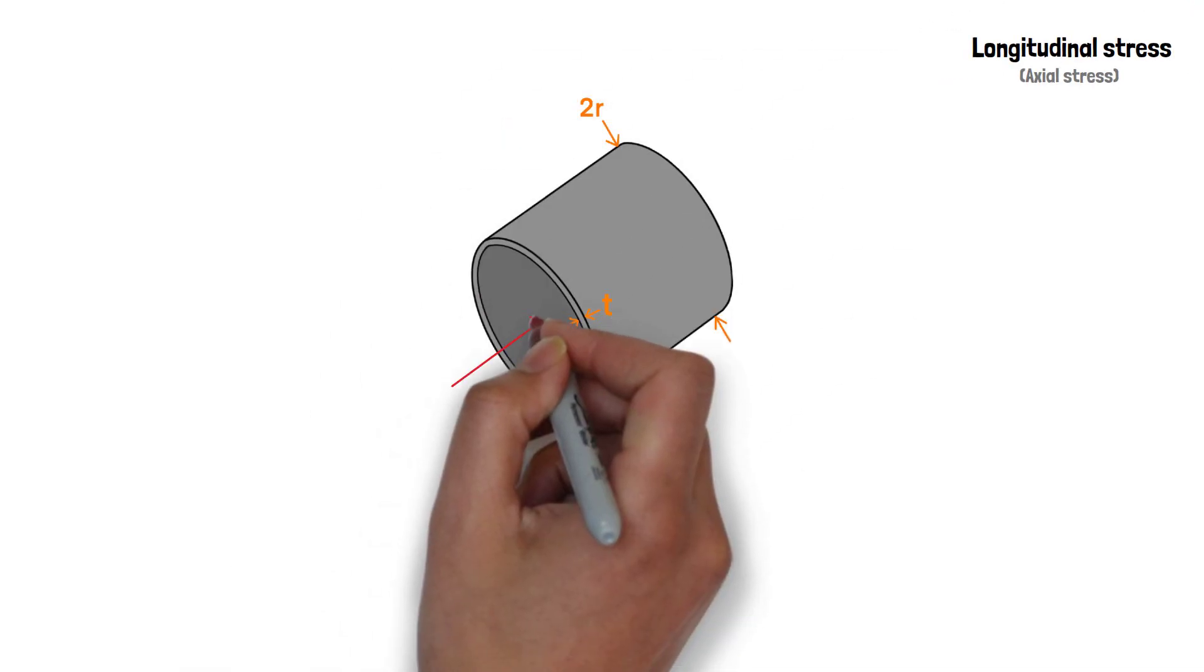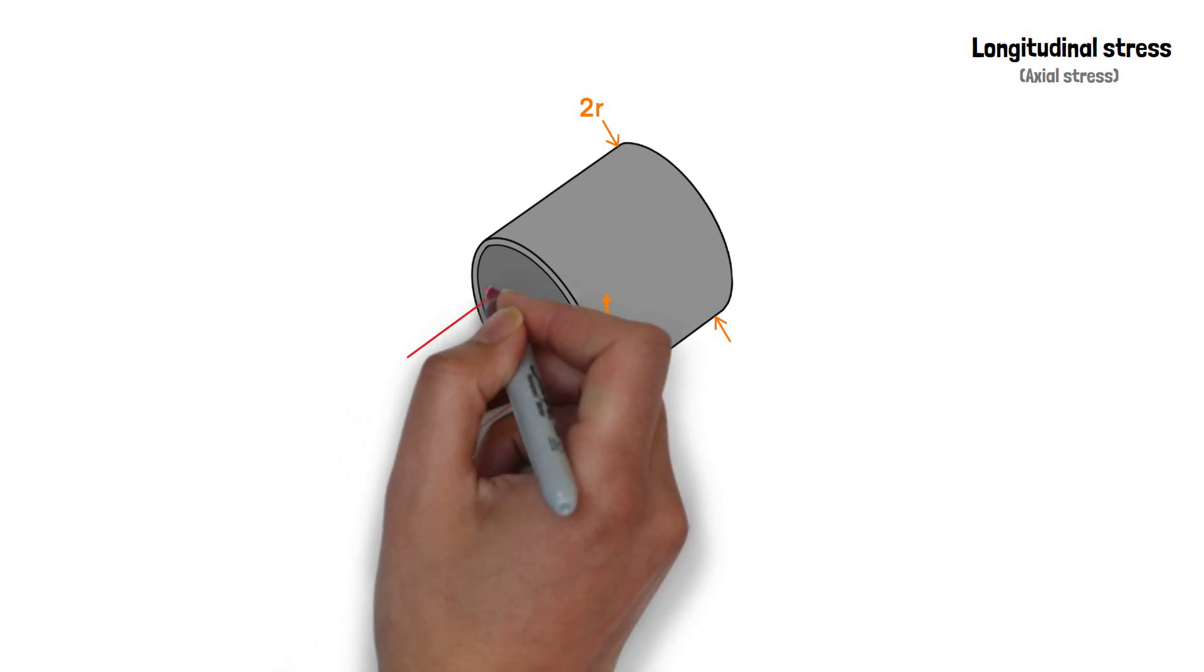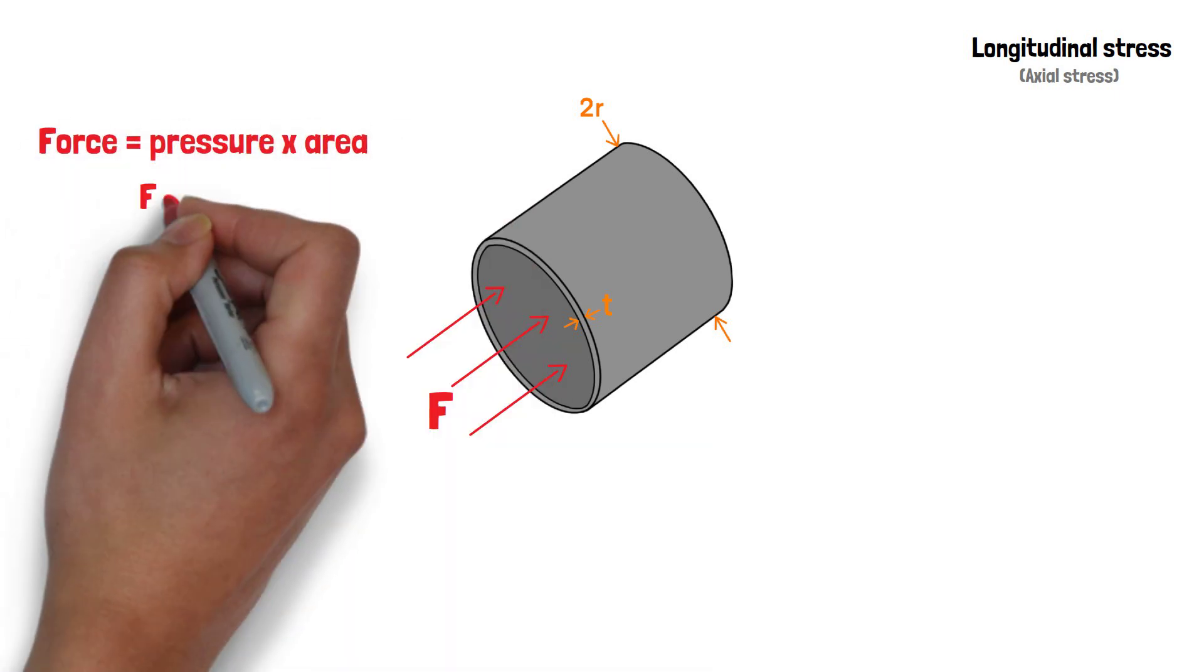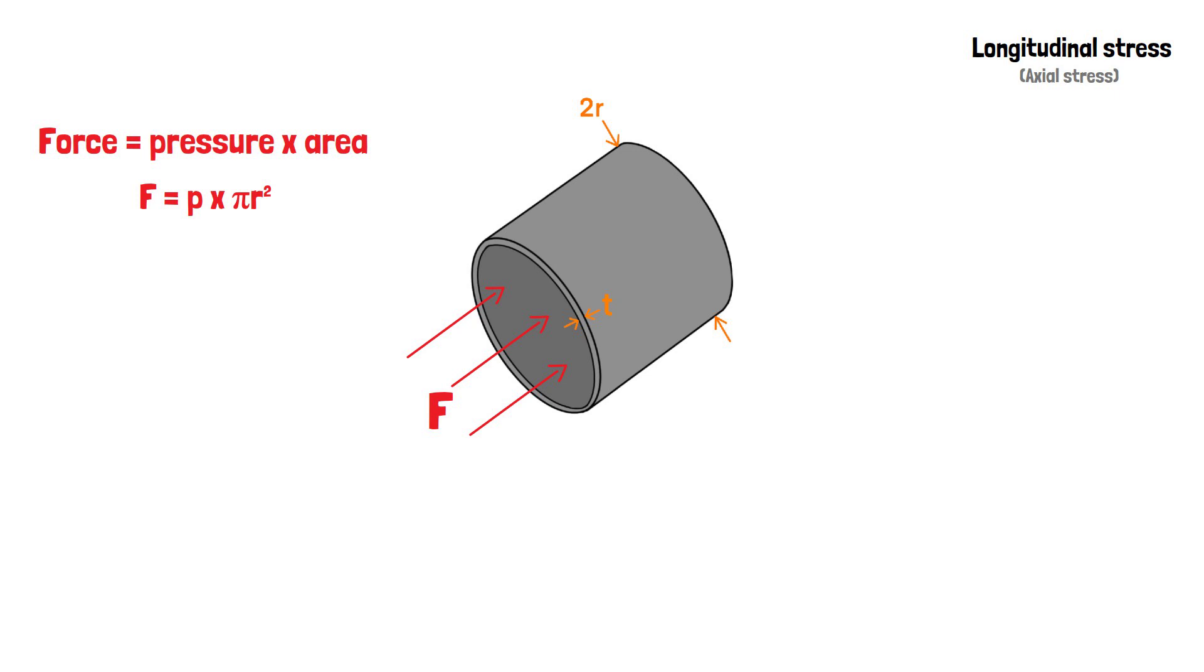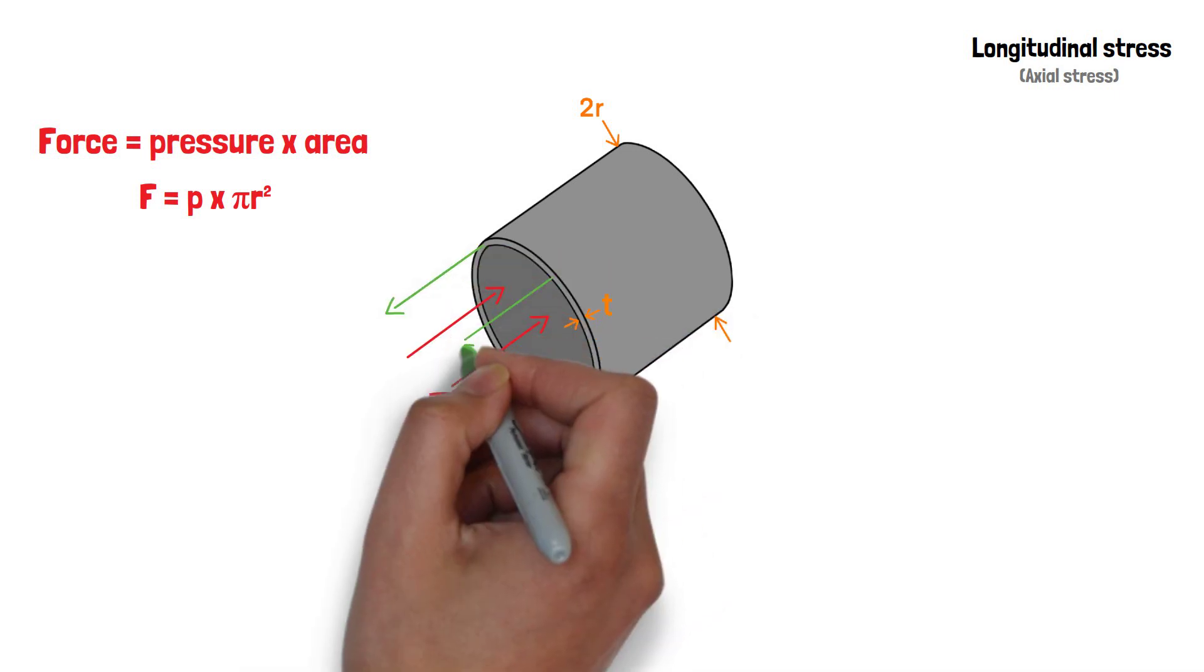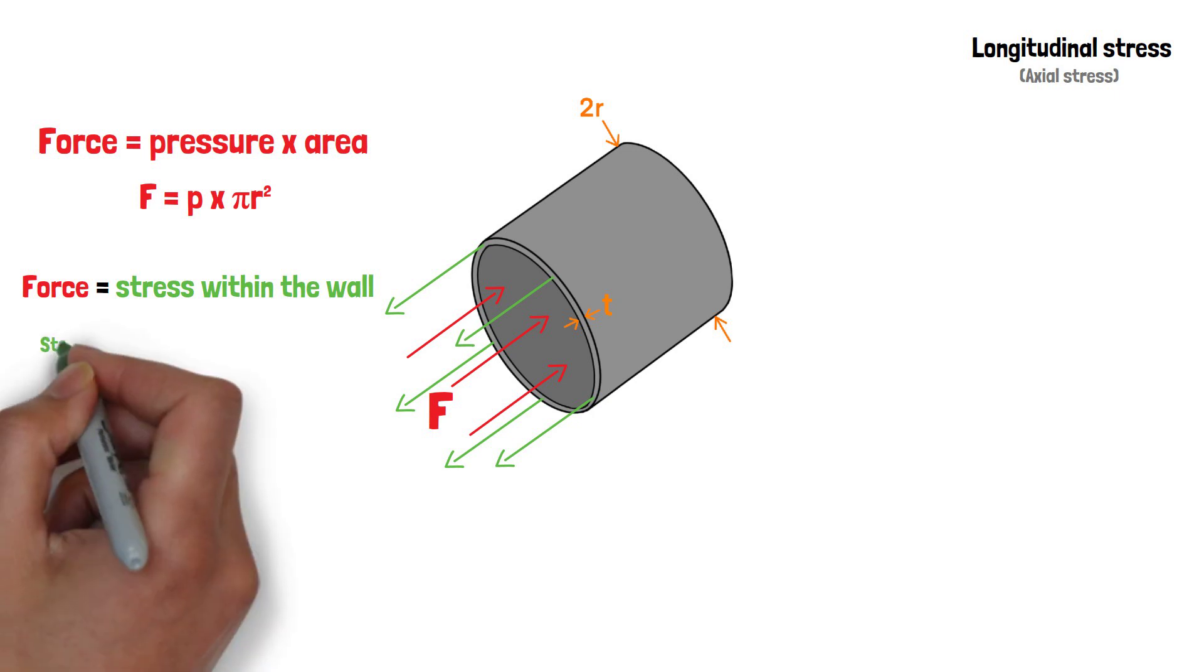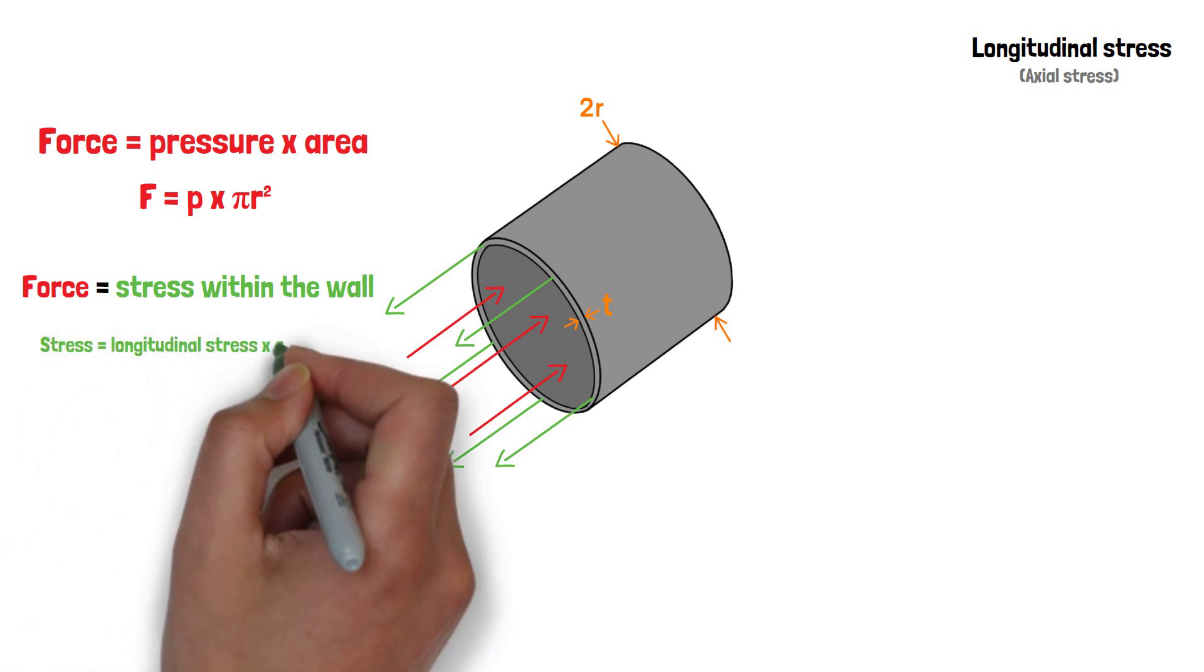Consider the force of the liquid or gas trying to split the cylinder in half. This force is equal to the stress within the cylinder wall, calculated by longitudinal stress times the area of the ring.